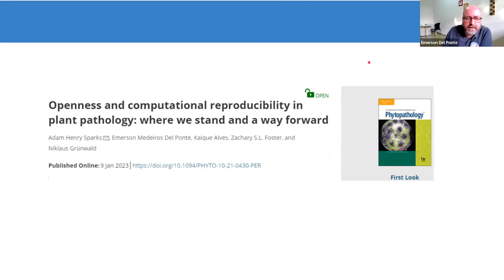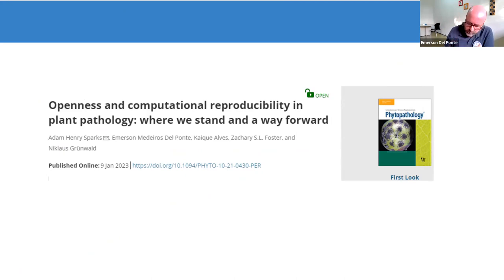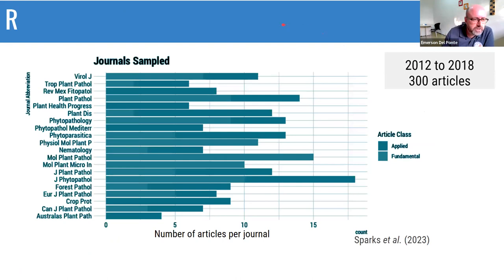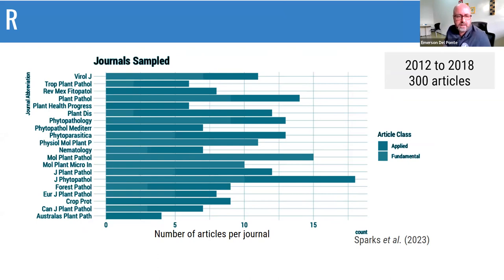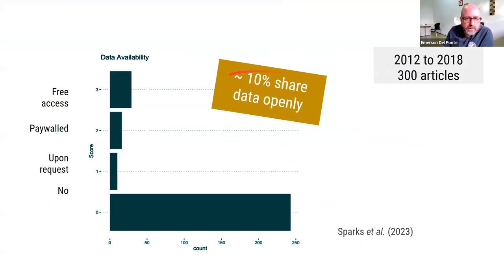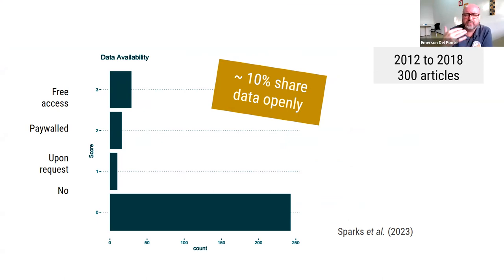We wrote a paper to understand the status of openness and reproducibility in our field. We surveyed many journals and more than 300 articles, looking at whether researchers were sharing and documenting their data and codes appropriately. We found that only 10% of all the papers shared data openly, and most of them were molecular data because there are repositories to store DNA data. Most of the experimental data from field experiments or greenhouse work — people are not sharing the data.